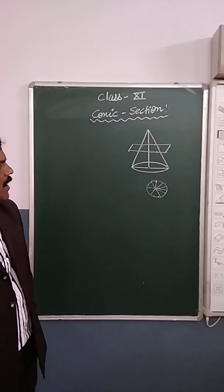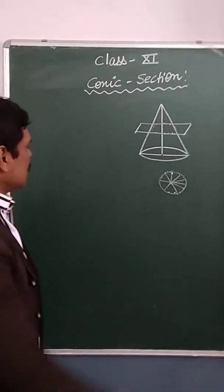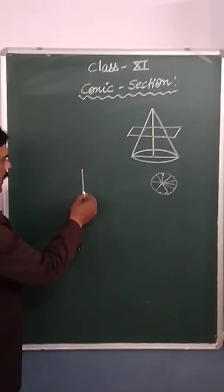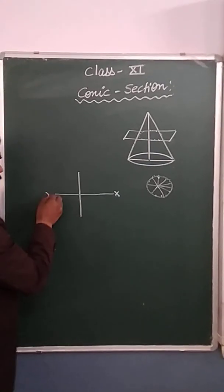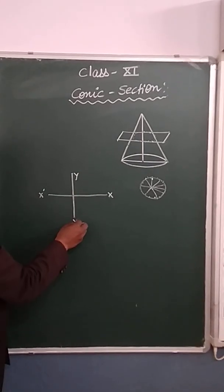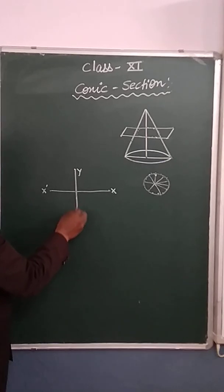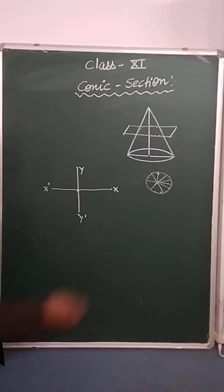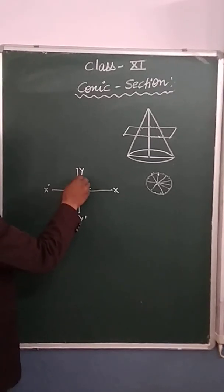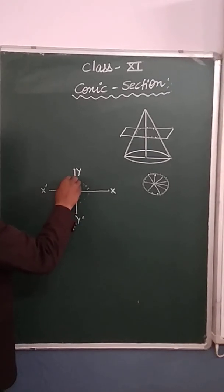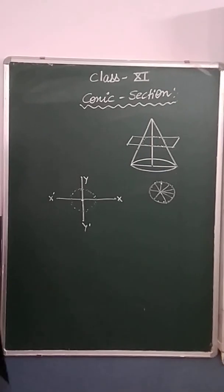Now we will discuss how to find out the equation of the circle. First of all, you will see that it is your coordinate axis — the x-x' and y-y' axes. Where these two line segments x-x' and y-y' intersect each other, that point is known as the origin. We want to draw this 2D shape — that is your circle. How do we find out the equation of the circle?